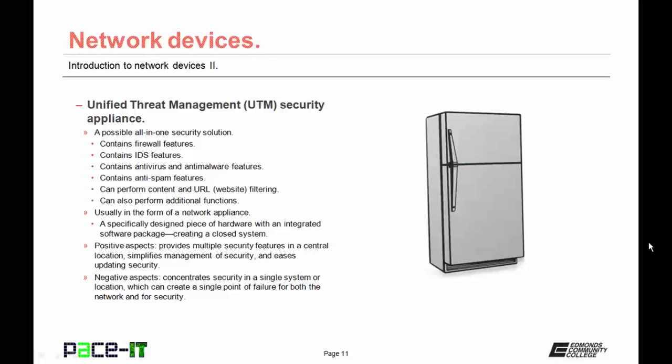Then there's the Unified Threat Management Security Appliance, or the UTM Security Appliance. It is a possible all-in-one security solution. It may contain firewall features, IDS features, antivirus and anti-malware features, anti-spam features, and it can perform content and URL filtering—depending on what kind of UTM you purchase. You can get all of those features in one package, usually in the form of a network appliance, which is a specifically designed piece of hardware with an integrated software package, creating a closed system.